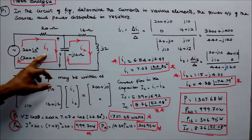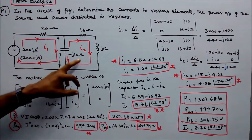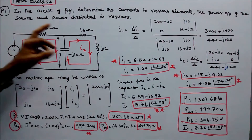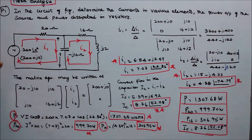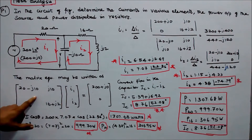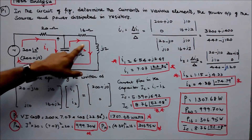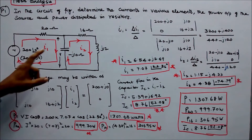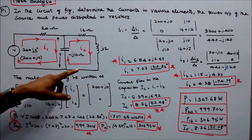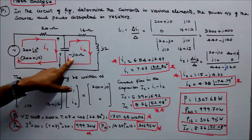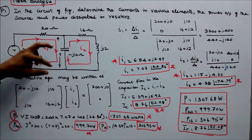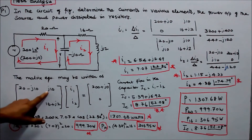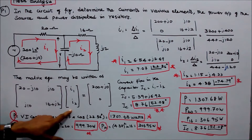There are two loops: this is loop 1 and this is loop 2. The loop current for loop 1 is i1 and for loop 2 is i2. Both loop currents are in the clockwise direction. To form the matrix, the first step is to find the diagonal elements. The first diagonal element is 20 minus j10; the second loop resistance is 16 plus j12 minus j10, which equals 16 plus j2. The element common to loops 1 and 2 is minus j10 ohms.